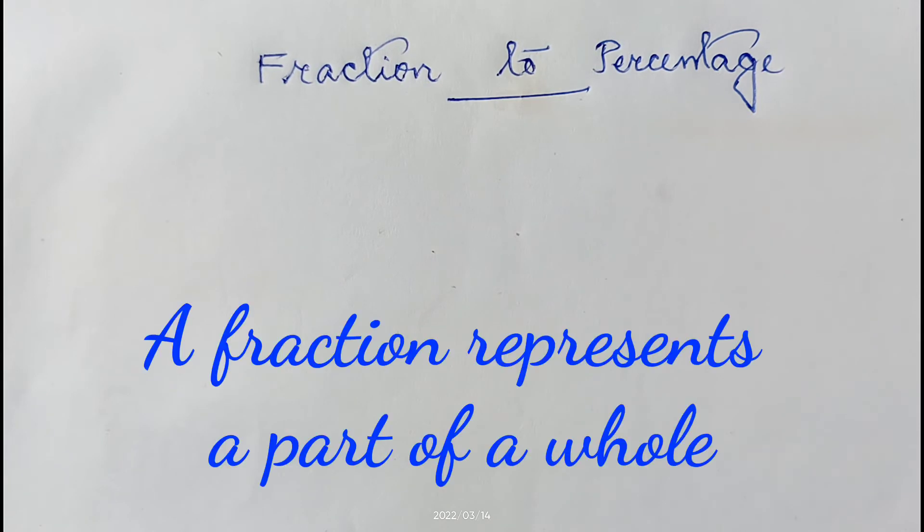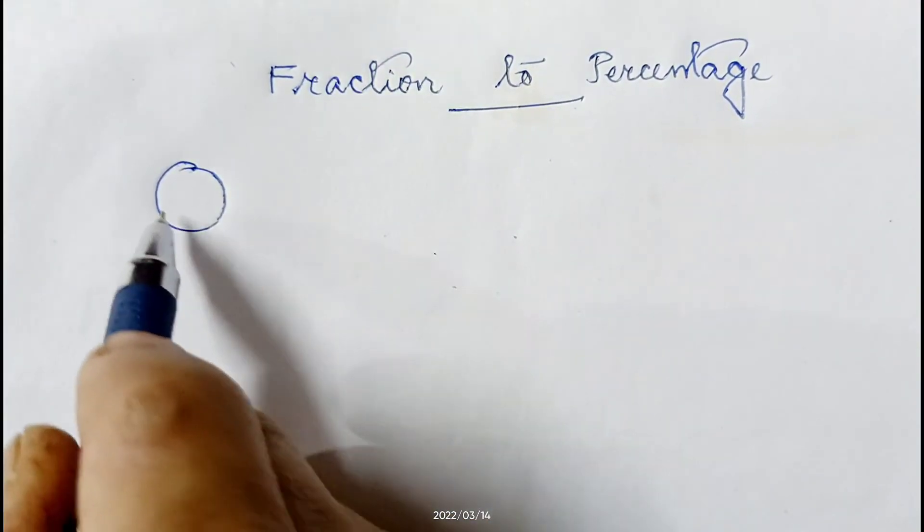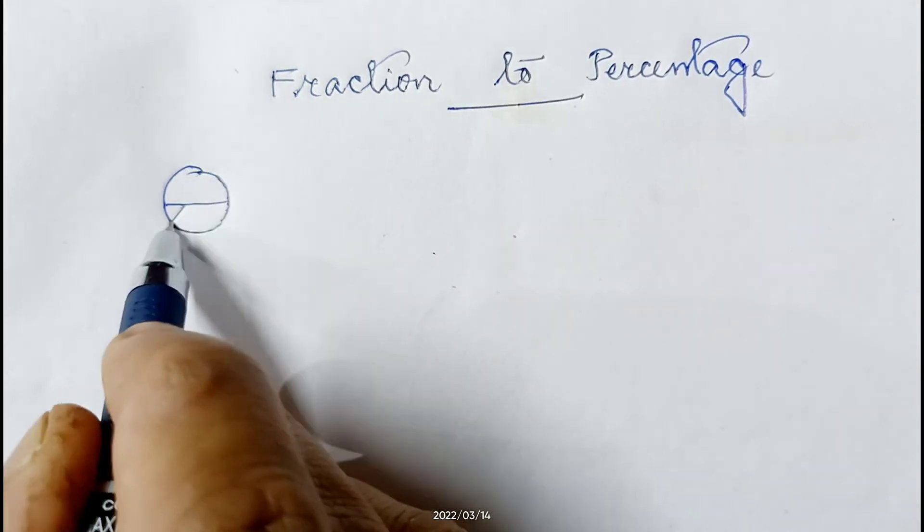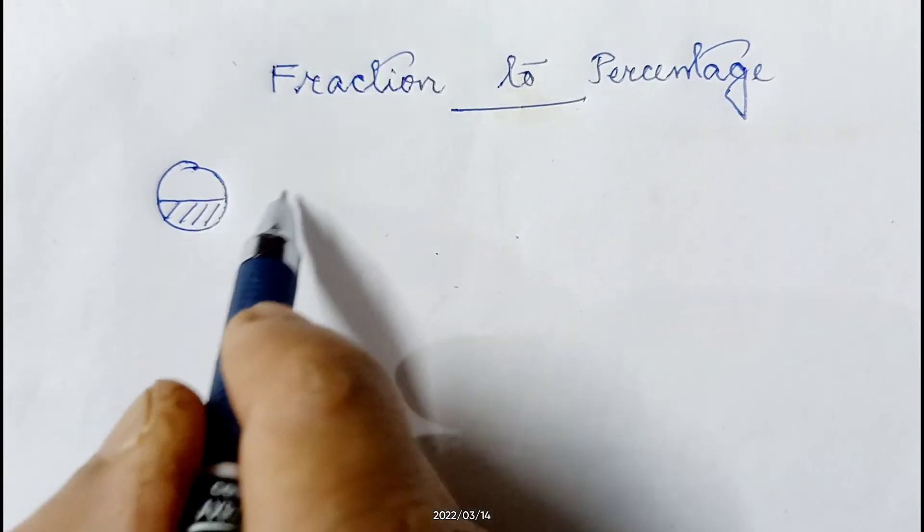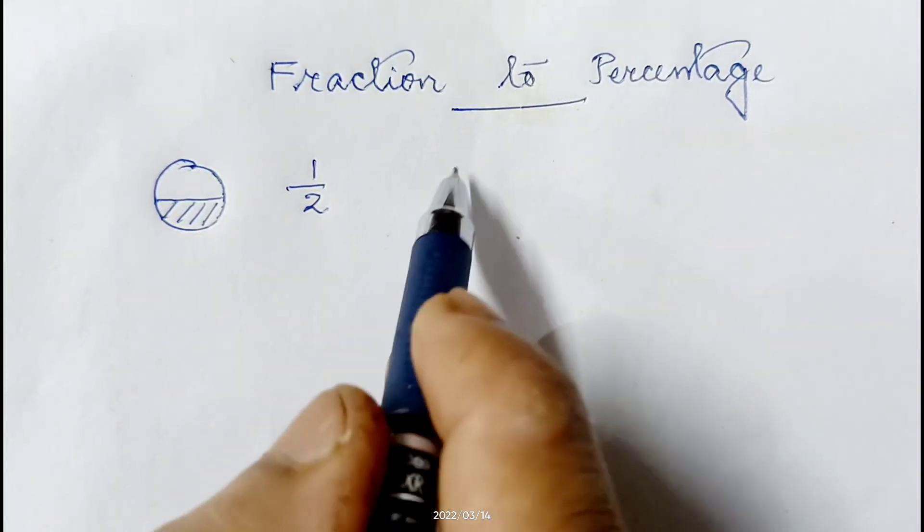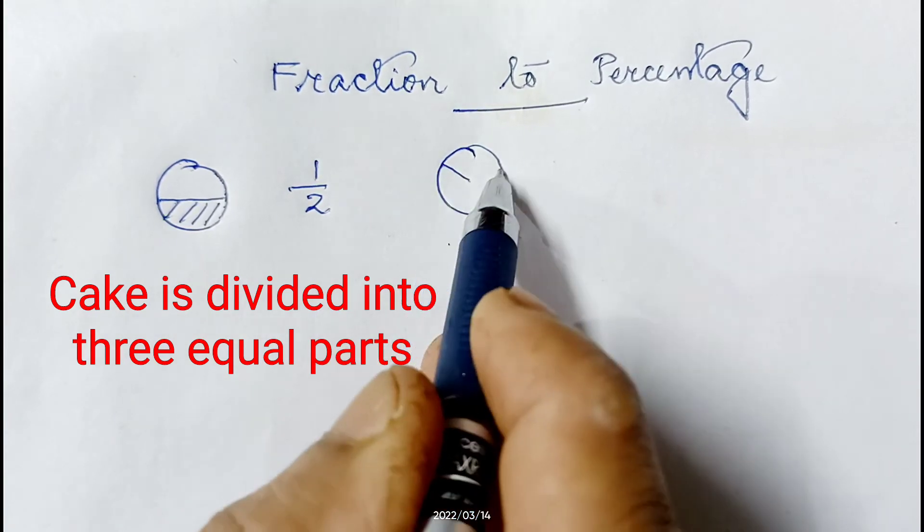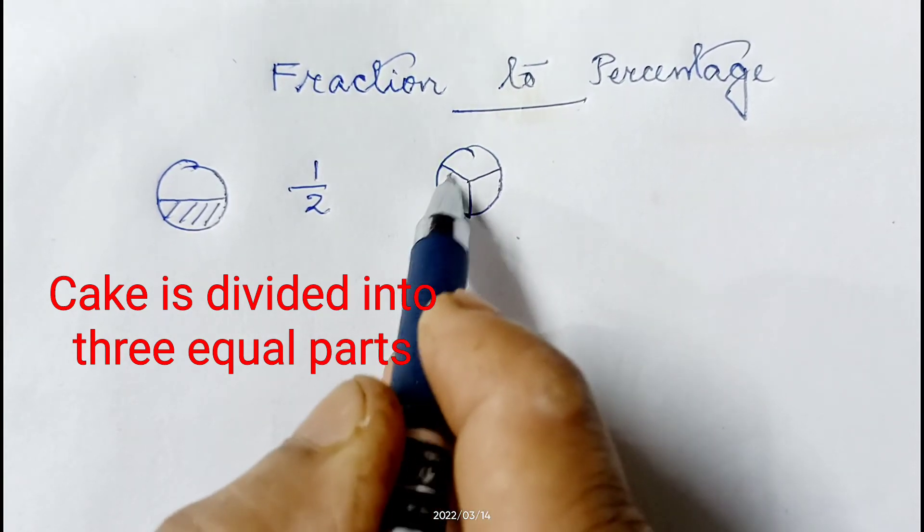Now what is a fraction? A fraction represents a part of a whole. Suppose if I take this one cake, we consider you take this part, then this part represents one part out of two, so that means it is half. If we consider another cake and if we divide into three parts like this and if we take this part, then it will be one part out of three parts.